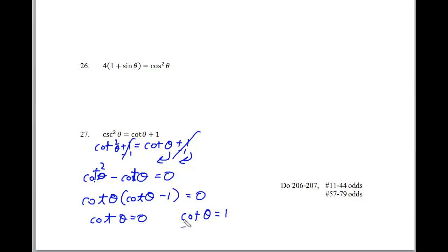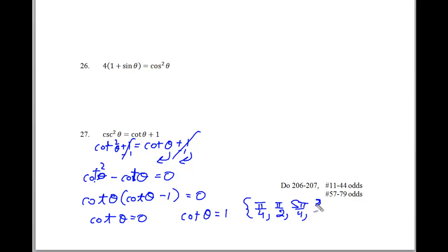Looking at the unit circle, there are four situations: cotangent equals 1 at pi over 4 and 5 pi over 4, and cotangent equals 0 at pi over 2 and 3 pi over 2. Thank you very much for watching — this has been the fourth of four videos for chapter 3, section 3 of trigonometry.